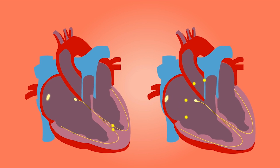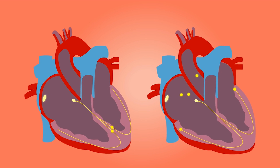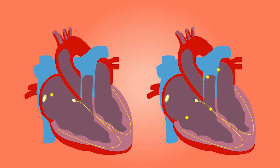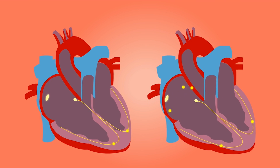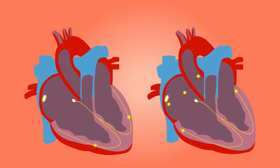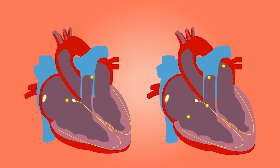Atrial fibrillation is the most commonly diagnosed heart arrhythmia, generally associated with an irregularly irregular heart rhythm that is usually fast, as can be seen on the right side of the screen. In atrial fibrillation, the heart's upper chambers — known as the atria — beat irregularly and chaotically, out of sync with the lower chambers of the heart, known as the ventricles.